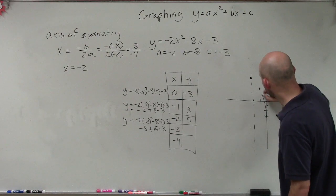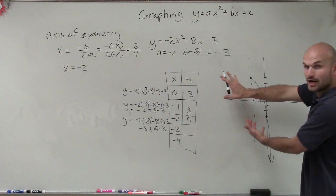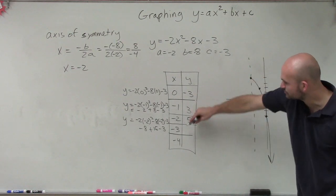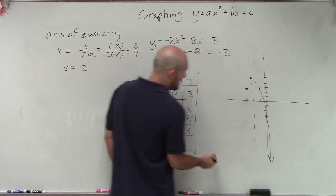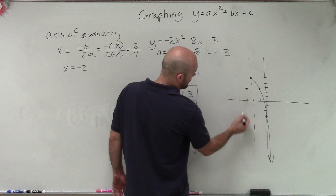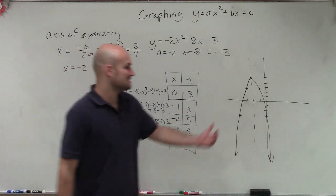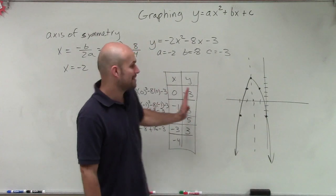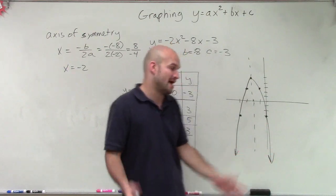Right now I have a graph that looks something like this. Remember, the axis of symmetry reflects our parabola. So if the point at x equals negative 1 is 1 unit away from the axis of symmetry, then the reflected point at negative 3 is also going to be 3. Then going over two points: at x equals 0 I was at negative 3, so at x equals negative 4 I'm also going to be at negative 3. By using the axis of symmetry, I reflected the points to create the full parabola.